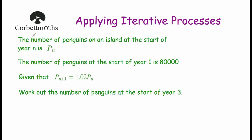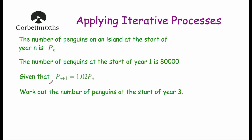Let's have a look at our first question. The number of penguins on an island at the start of year N is PN — that's P with a subscript N. The number of penguins at the start of year 1 is 80,000. Given that PN+1 equals 1.02 times PN, work out the number of penguins at the start of year 3.